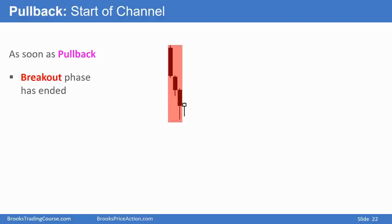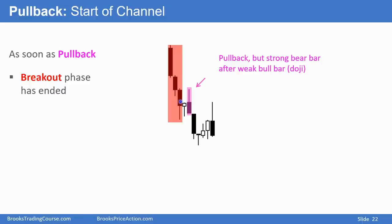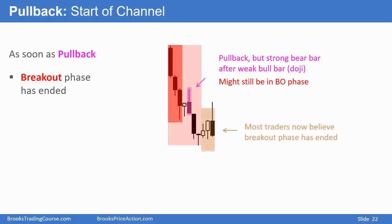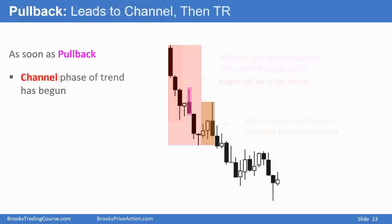Here, this bar went above the high of that bar — so a pullback — and chances are the breakout is over. At this point we have a three-bar pullback with two bull bars following fairly closely after an earlier pullback, so I think we are in a channel. We still have lower highs and lower lows, so it's still a bear trend — but it's a weaker trend; now it's a channel. As soon as you get a pullback, traders begin to decide the breakout phase has ended and it's now a channel. If the channel is tight with all pullbacks lasting one to three bars, then it's better only to be shorting. And on a higher timeframe chart, it's probably still a breakout.